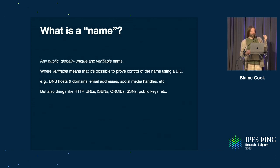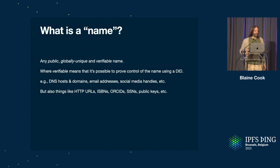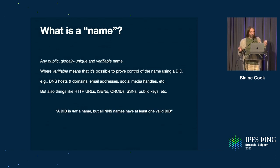My Twitter handle, at Blaine, is a name that I can prove control of. But also things like HTTP URLs, ISBNs — it's sort of notional that you could prove that, but your publisher could publish a key somewhere and give you the ability to prove that you published a book. ORCIDs, the academic IDs, social security numbers — if the government provided a way to prove that you own that name — public keys, etc.